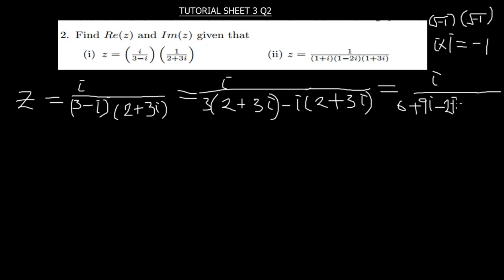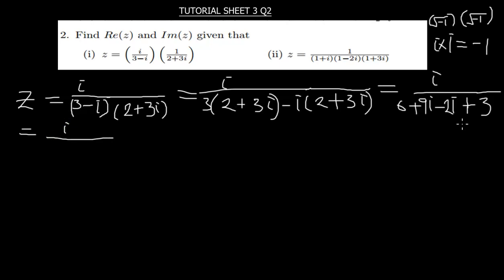So instead of getting negative 3, we will have positive 3. Continuing from here, on top we still have i. Then 6 plus 3 gives 9, and 9i minus 2i gives 7i. So we now have i over 9 plus 7i.